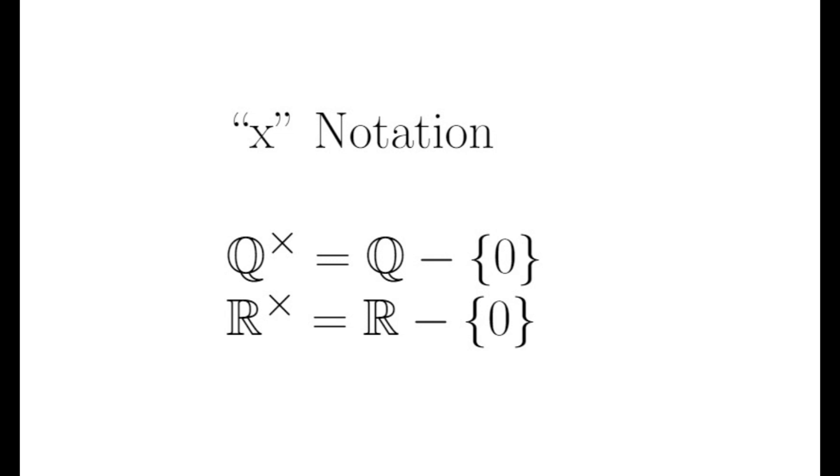Now you may notice that a field is just a special type of group with extra structure added onto it. In fact, fields can be described in terms of groups or rings which are also essentially groups with added structure. I'd like to introduce the x notation here, where Fx represents a set without the additive identity. For example, Qx is the set of rational numbers minus zero, and Rx is the set of real numbers minus zero.